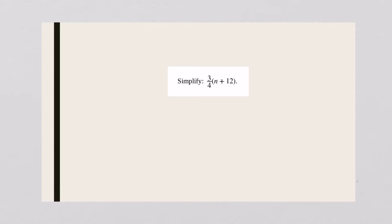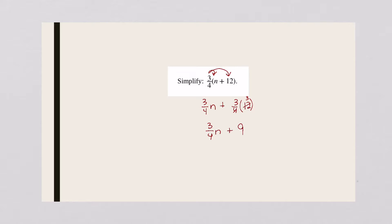Don't freak out just because you see fractions. Three fourths times n and three fourths times 12. So I've got three fourths n plus three fourths times 12. Four will go into 12 three times, three times three is nine. So three fourths n plus nine. You can't combine those — they aren't like terms, they don't both have n's, so don't try to combine them.